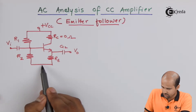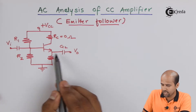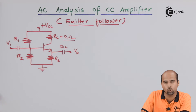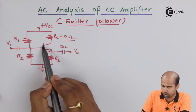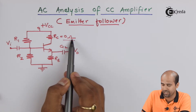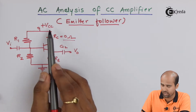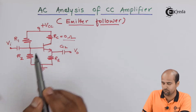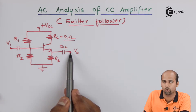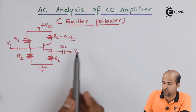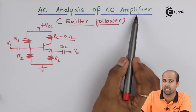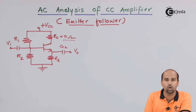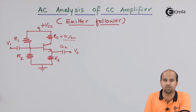In this circuit we have output at the emitter terminal. I have placed RC purposely with value zero ohms, so the resistance RC is equal to zero. That means the collector is directly connected to your plus DC source, and the collector is common to both input and output — that's why it is called the common collector amplifier, or emitter follower.